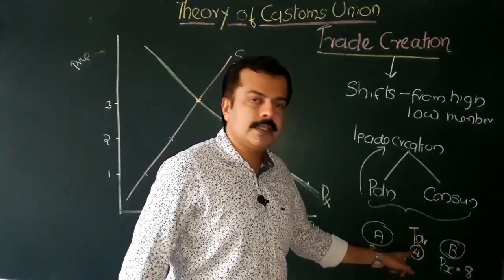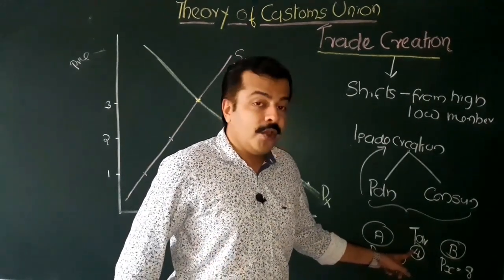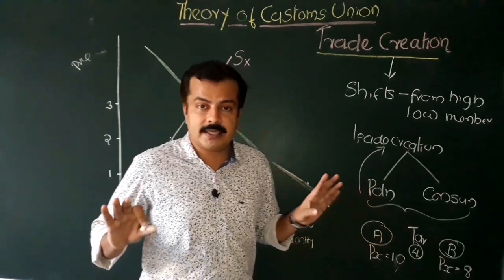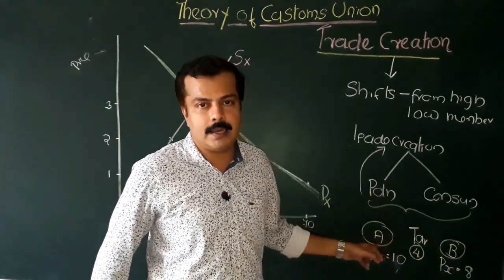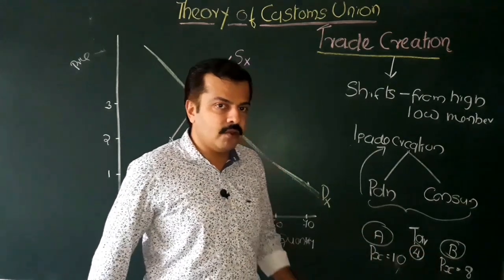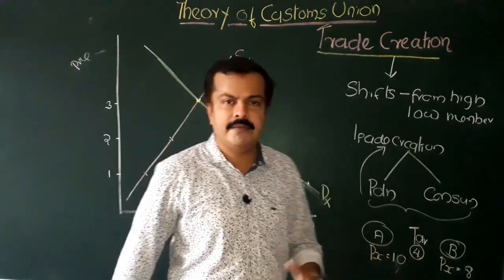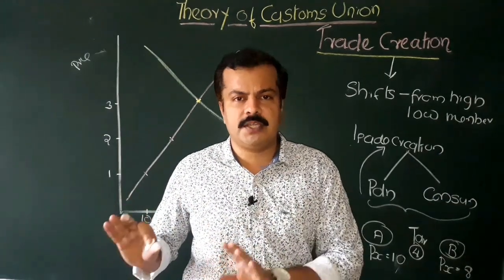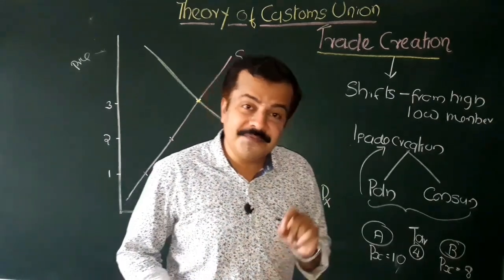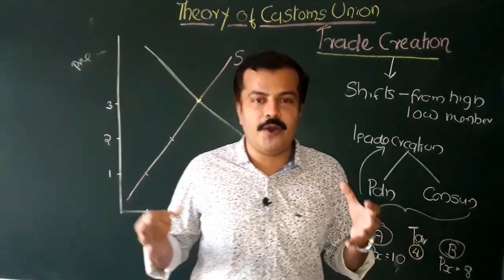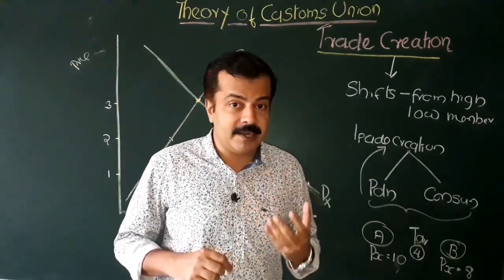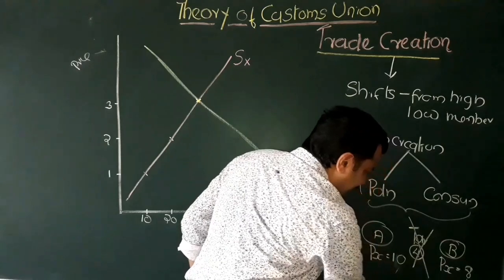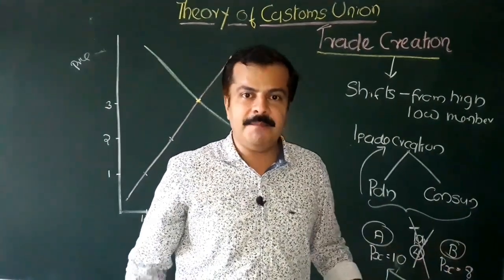Now let us suppose that Country A and Country B form an economic integration scheme — when they form this integration, there will not be any tariff. So this commodity will enter Country A from Country B without tariff. This commodity will now be sold in Country A at Rupees 8. Earlier this commodity was being purchased from a high-cost domestic producer; now since this commodity is being imported from Country B, the price of this commodity will decline. Domestic production will have to fall because they will no longer be relying on high-cost domestic production. This is the essence of trade creation — high-cost domestic production is replaced by low-cost imports from the member country.